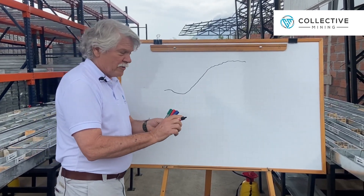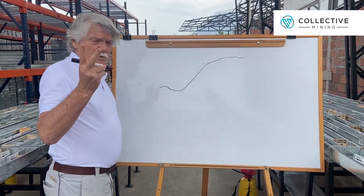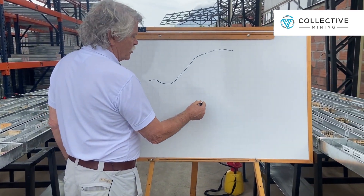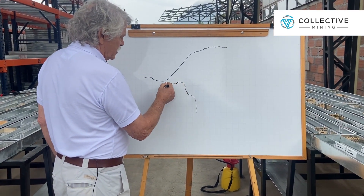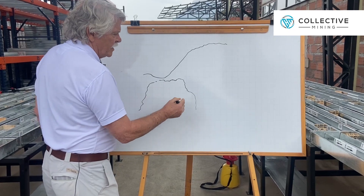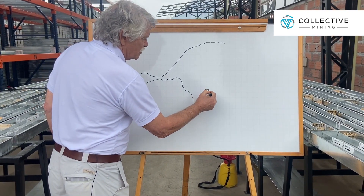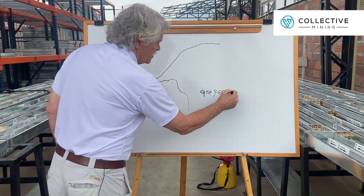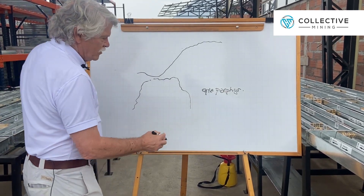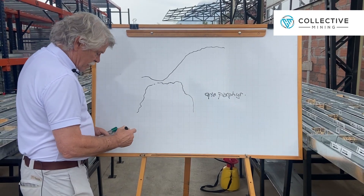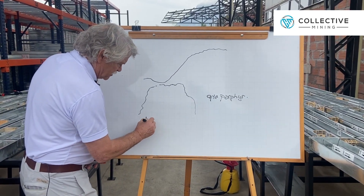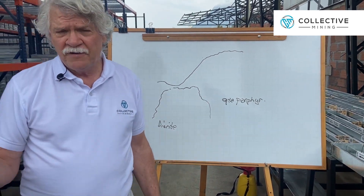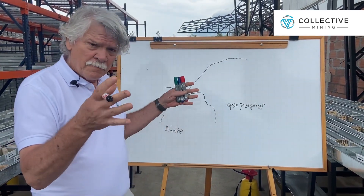You'll have to forgive some of the drawing because I'm basically only good at sticks — I'm not an artist. You have two intrusive units here. You have what looks to be an older quartz porphyry unit, and then you have a younger unit that intrudes that, and that's a diorite — systems of diorites. In each of these are multiphases, so I've just lumped them all together.